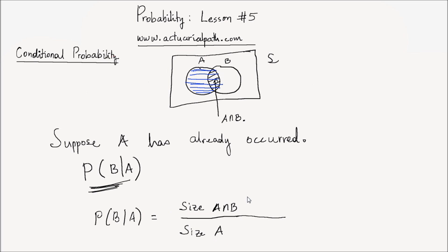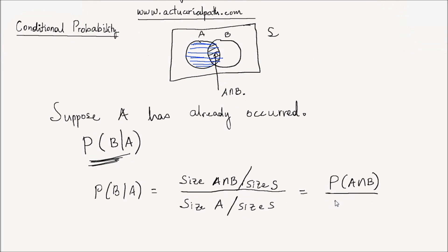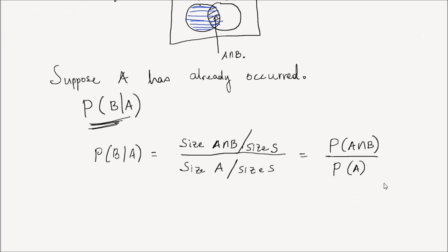If I divide the numerator and the denominator by the size of the sample space, the numerator gives me the probability of A intersection B, and the denominator is equal to P(A). Therefore, I have the conditional probability formula: P of B given A is equal to P of A intersection B, divided by P of A.